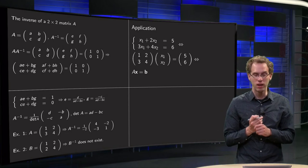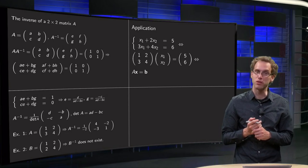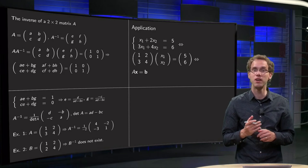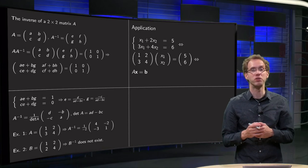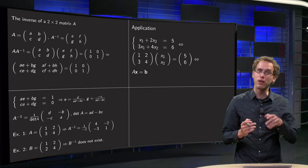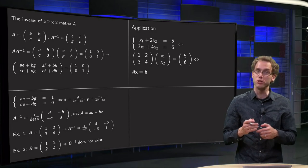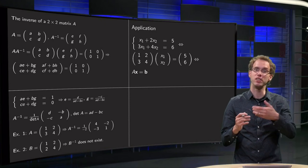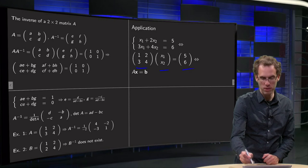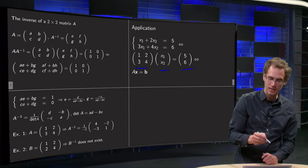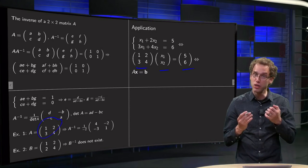Then, let's look at one application. x1 plus 2 times x2 equals 5, and 3 times x1 plus 4 times x2 equals 6. A linear system, two equations, two unknowns. Of course, we know how to do that. We can use row reduction. But we can also do it another way. Now we have the inverse of a matrix A. Because you see, you can write this linear system as a vector equation, and then as a matrix equation. A times x equals b. And this A happens to be exactly the same as this A we had over here, from which we already know the inverse.